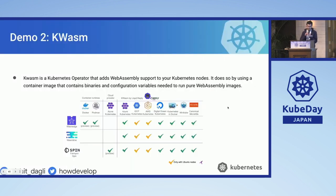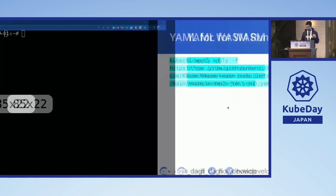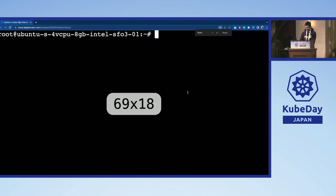The other demo I want to quickly showcase is KWASM — a Kubernetes operator that allows you to directly run WebAssembly workloads on Kubernetes. It comes out of the box with support for multiple Kubernetes distributions — whether Minikube or MicroK8s — and multiple WebAssembly runtimes. You can install KWASM using Helm, then run the kubectl command to install the WebAssembly example. I've already done that — I'll apply this and test out this particular job.